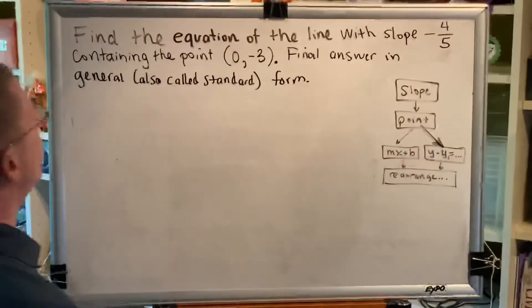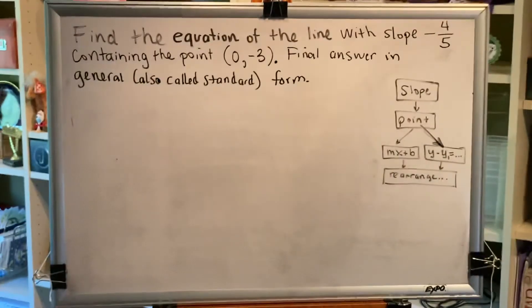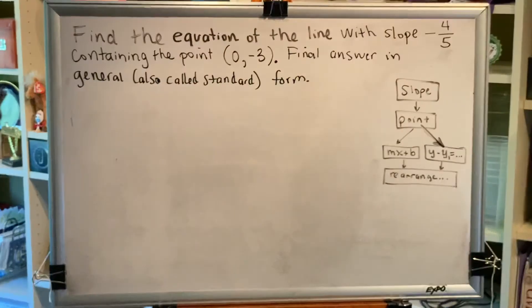We go through our flowchart. The first thing we need is a slope. Great, they gave it to us, negative four-fifths. The next thing we need is a point. Great, they gave it to us, zero negative three.